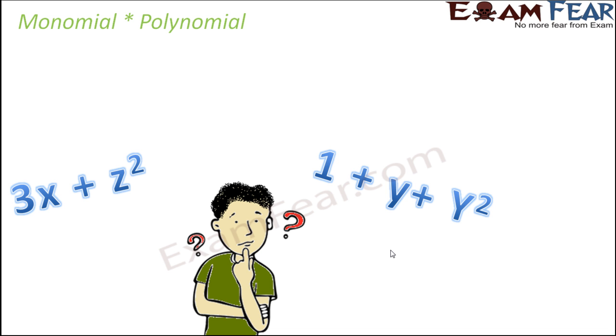Where you have a binomial to be multiplied with a trinomial, or a binomial with a binomial, or a monomial with a trinomial - so in that case how does it happen and does everything remain same or are there some changes?